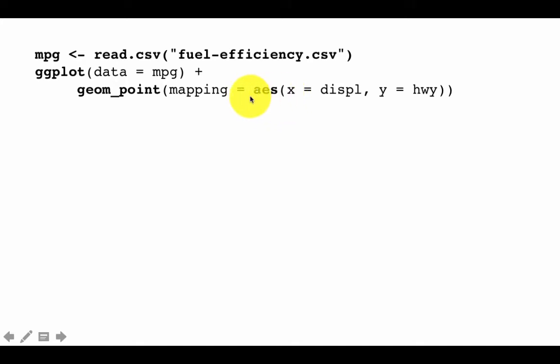And of course, obviously, one of the things you want to control when you're plotting points is, well, what defines the points? What is on the x-axis? What is on the y-axis? So in this case, we are saying x is displacement. And of course, this is in the context of the data frame MPG that we've already read in. So x is displacement, y is highway, which is the highway miles per gallon in this particular data set.